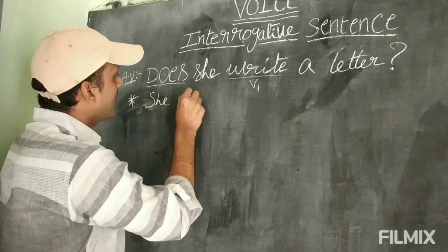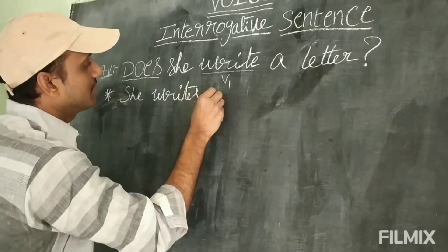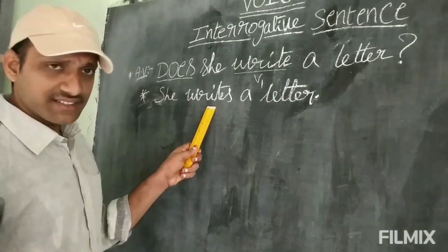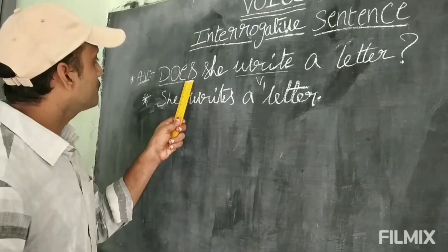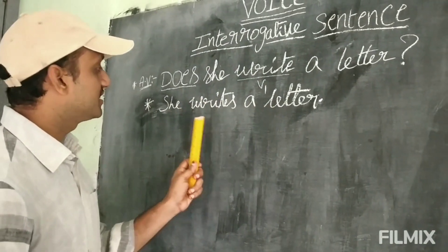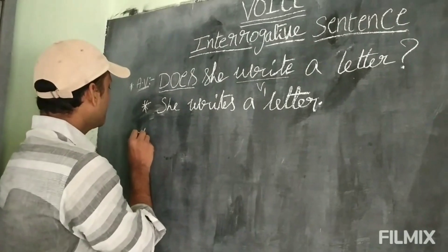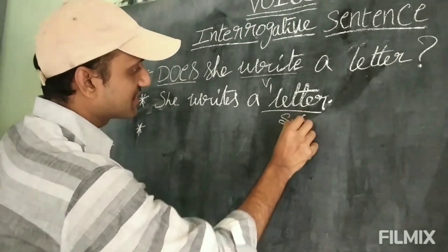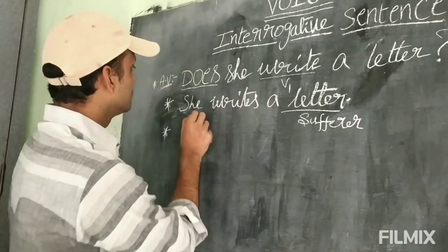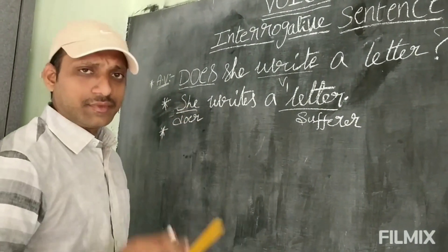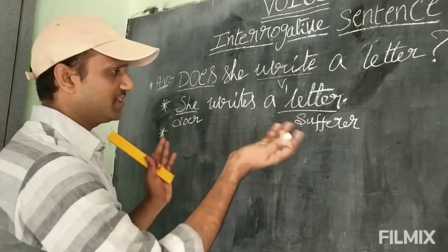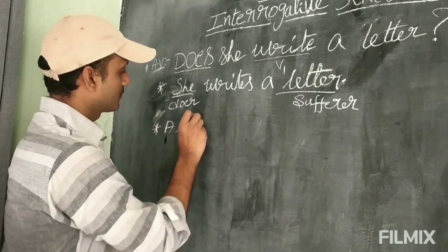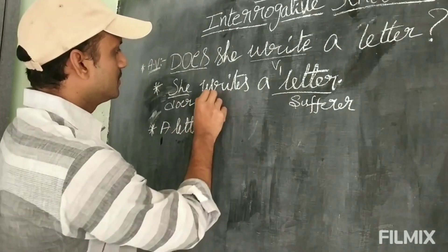We have to answer this question first: 'She writes a letter.' This is just the answer for the question. Now we have to change this sentence into passive form because it is in active form. We have to observe carefully — what is the doer and what is the sufferer? Here, 'a letter' is the sufferer and 'she' is the doer. The main rule: exchange the positions of doer and sufferer.